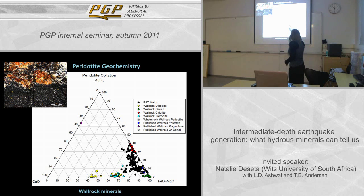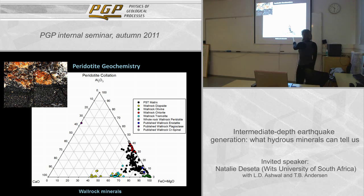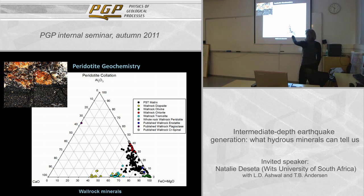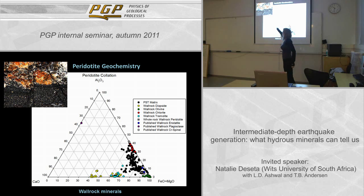Moving to the geochemistry, starting with the peridotite. The black dots indicate the bulk matrix composition, gray dots are wall rock material analyzed with XRF, and the different wall rock minerals are diopside, tremolite, olivine, enstatite, clinopyroxene, and chlorite. The composition of the bulk matrix is well constrained by the wall rock minerals, indicating potentially near-wholesale 100% melting of the peridotite wall rock — except that there is a very strong trend toward the chlorite composition.